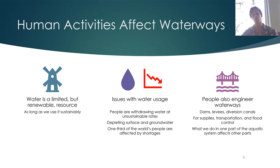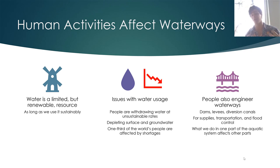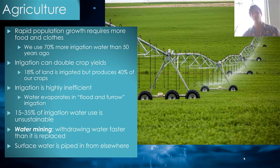People also engineer waterways through dams, levees, and diversion canals, using them for water supply, transportation, and flood control. Coastal estuaries and lakes are sometimes artificially opened to let water out and prevent flooding of suburban populations. How we shape these water bodies has important implications for how ecosystems function and how the water cycle has far-reaching impacts in locations not directly associated with the areas we're altering. Agriculture is a huge source of consumptive water use — rapid population growth requires more food and clothes, so we are using 70% more irrigation than even 15 years ago.